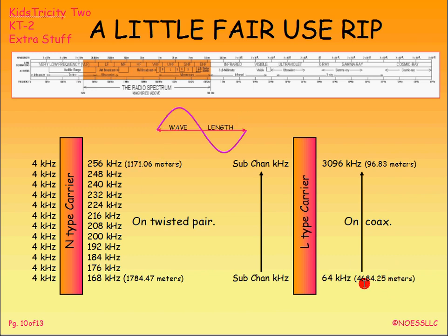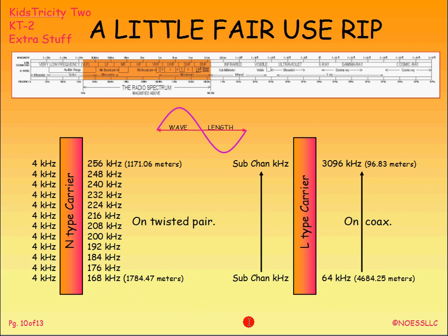It's much more obvious here: the wavelength at 64 kHz is over 4,000 meters, but at 3,096 kHz it's only 96 meters long. The higher frequency you go, the shorter the wavelength. But keep this in mind — we never used the description of wavelength on these early systems. It just wasn't done. We always talked about the frequency of the channel, not the wavelength.